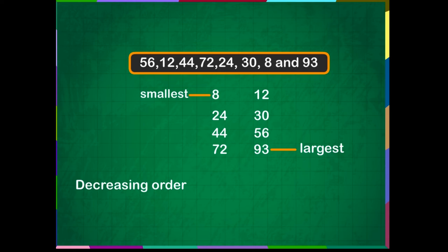The next larger number is 72. Then comes 56. Then it is 44. 30 is the next larger number. 24 comes next. 12 comes next. And finally, 8 is the smallest number in the given numbers.